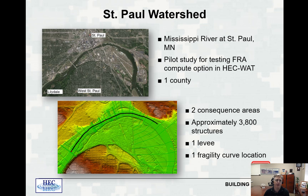The first example is on the Mississippi River through St. Paul, Minnesota. The purpose was to perform a pilot study of the flood risk analysis compute option for the levee safety group of the Corps. It's a simple, small study — one county, two consequence areas, approximately 3,800 structures, one levee, one fragility curve location. Only HEC-RAS and HEC-FIA were utilized in this particular study.